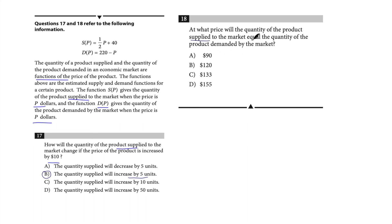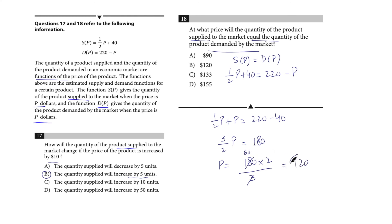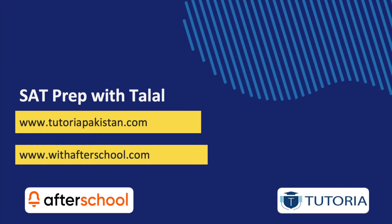Question 18: at what price does quantity supplied equal quantity demanded? Set s(p) = d(p): ½p + 40 = 220 − p. Combine like terms: ½p + p = 220 − 40, so (3/2)p = 180, giving p = 180 × (2/3) = 120. The price is $120, which is option choice B.